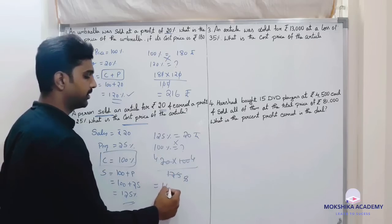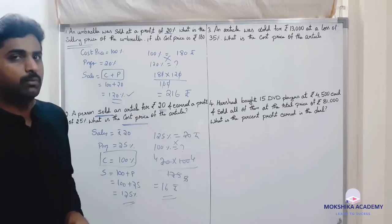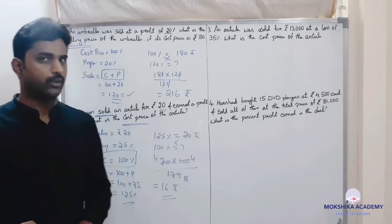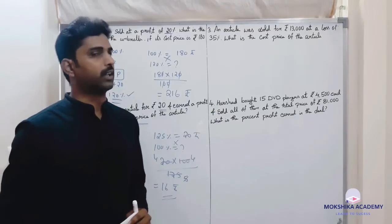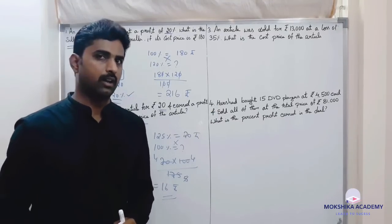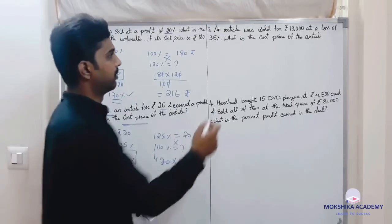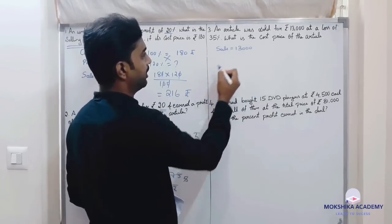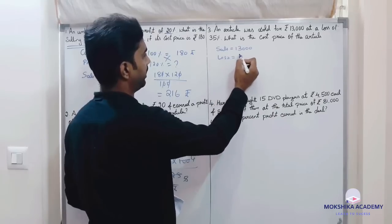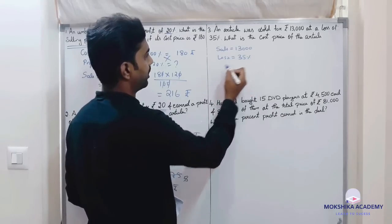25 fives are 25, fours are four, ones are five, fours are four. So the cost price is rupees 16. Okay students, an article was sold for rupees 13,000. Sales is 13,000. Loss is 35 percent.